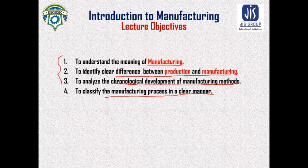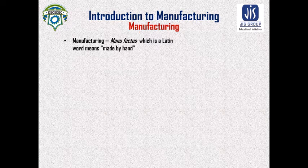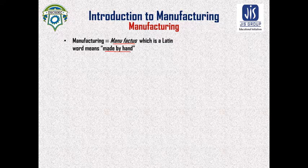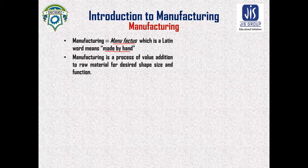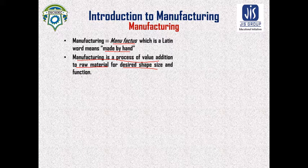The term 'manufacturing' came from the Latin word 'manufacture,' which means made by hand. So anything that can be made by hand is known as manufacturing. In the engineering definition, manufacturing can be treated as a process — it is a process of value addition to raw material for desired shape, size, and function.